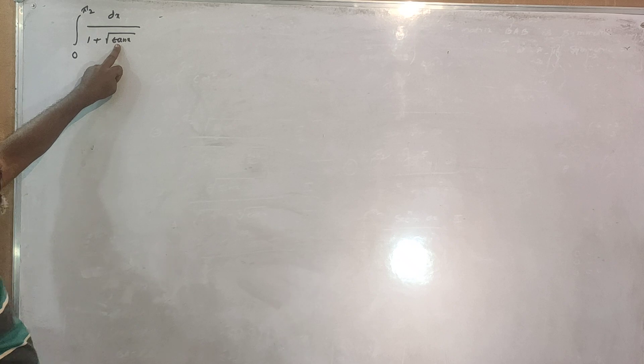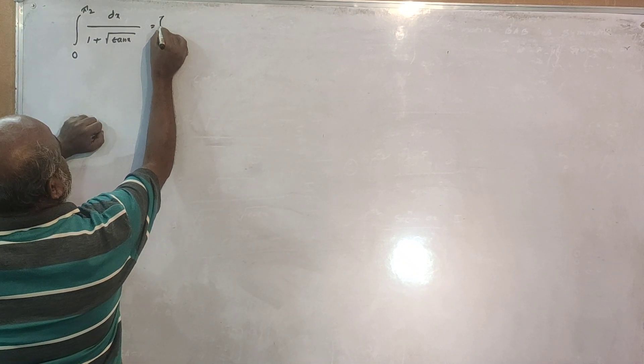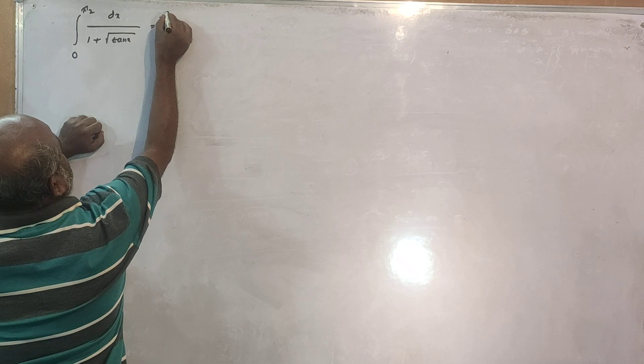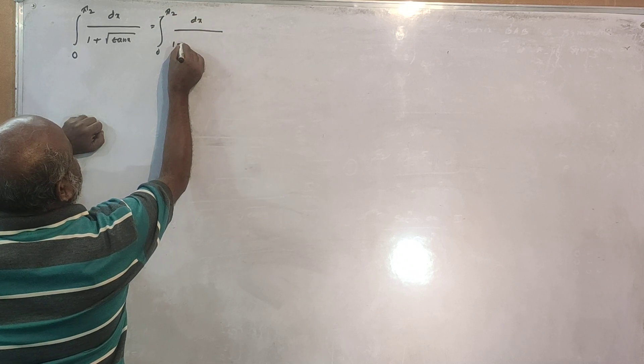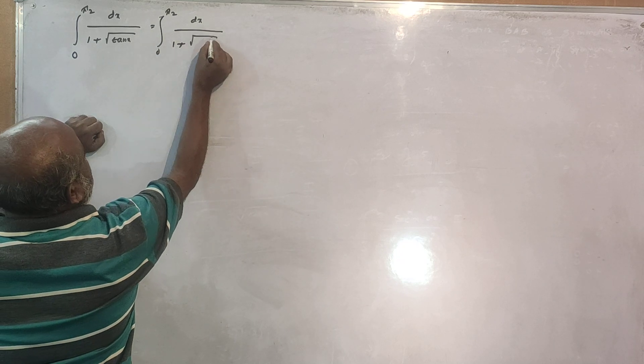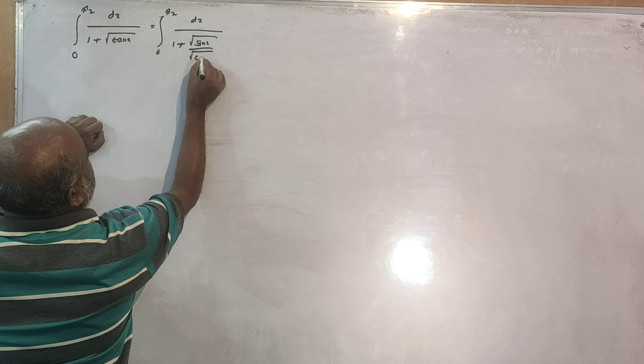This is how to get tan. This is how to get 0 to 5 by 2. This is dx divided by 1 plus root of sin x divided by root of cos x.